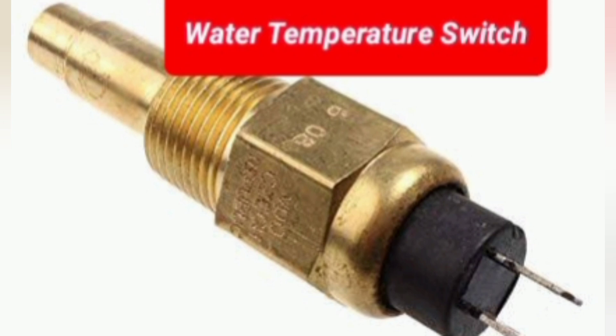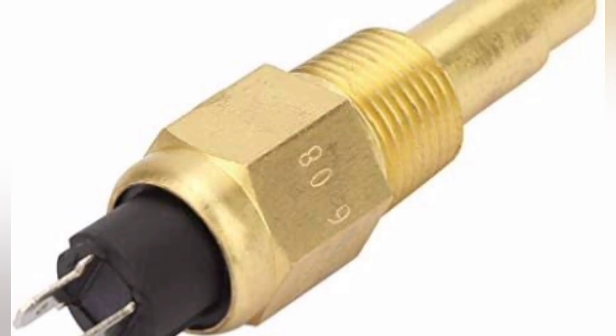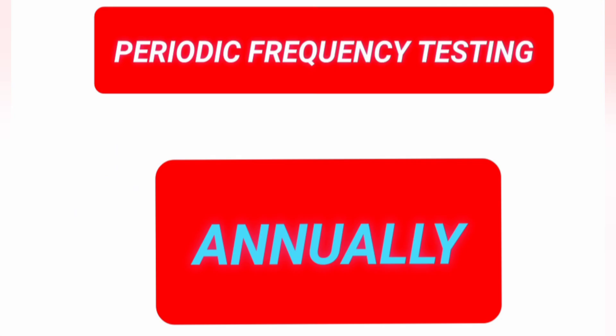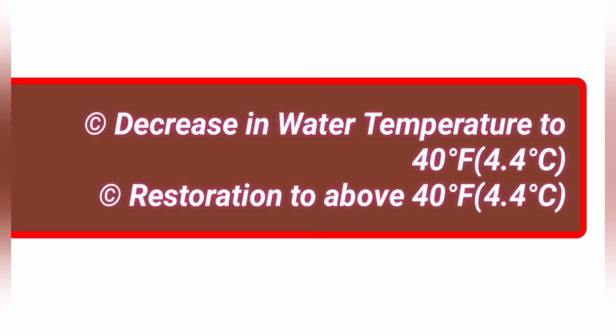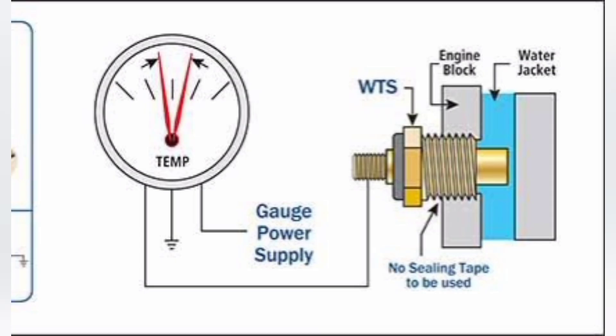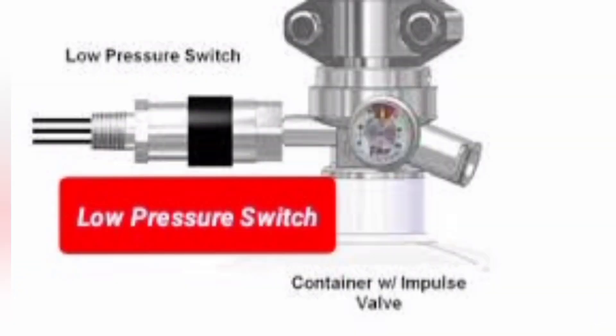Next one is water temperature switch. The method is to operate the switch and verify receipt of signal to indicate the decrease in water temperature to 40 degree Fahrenheit and its restoration to above 40 degree Fahrenheit.